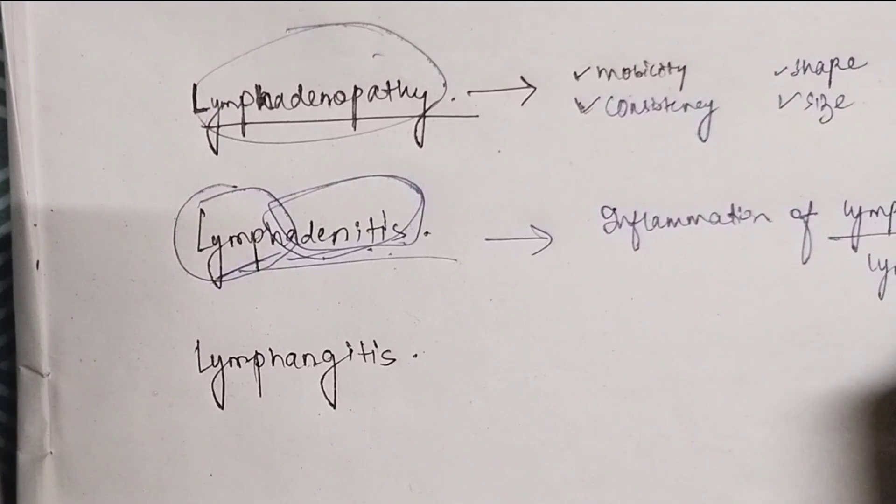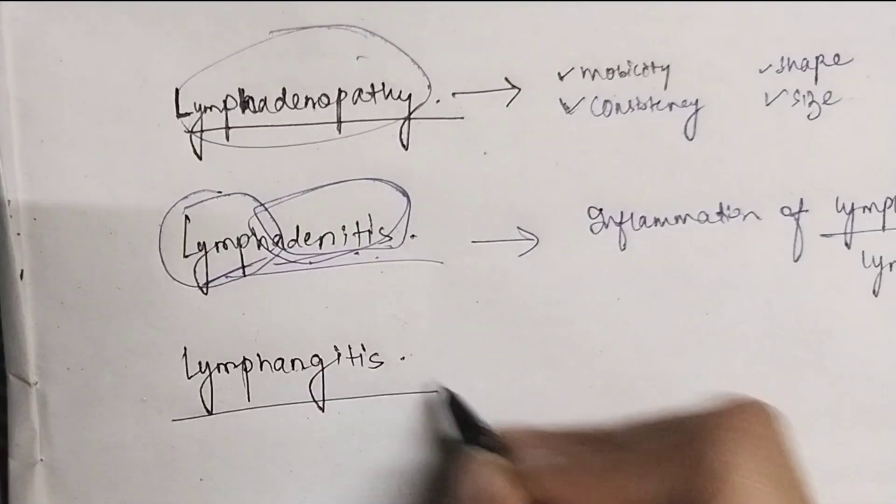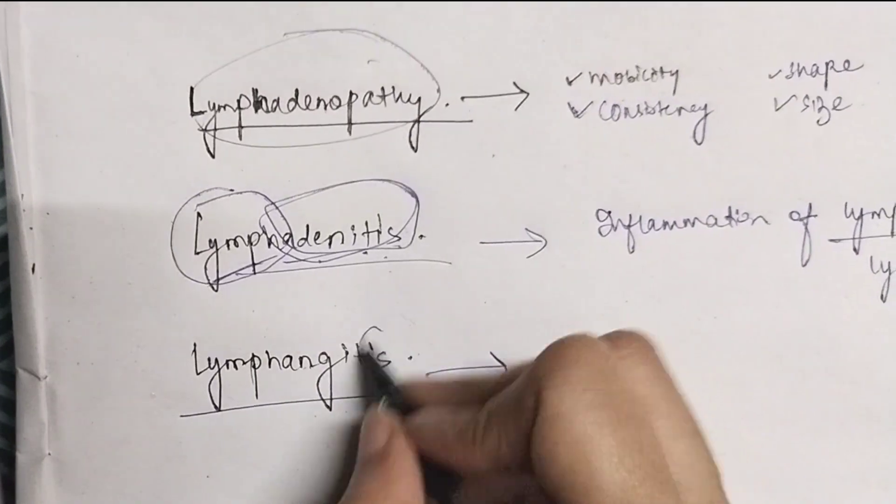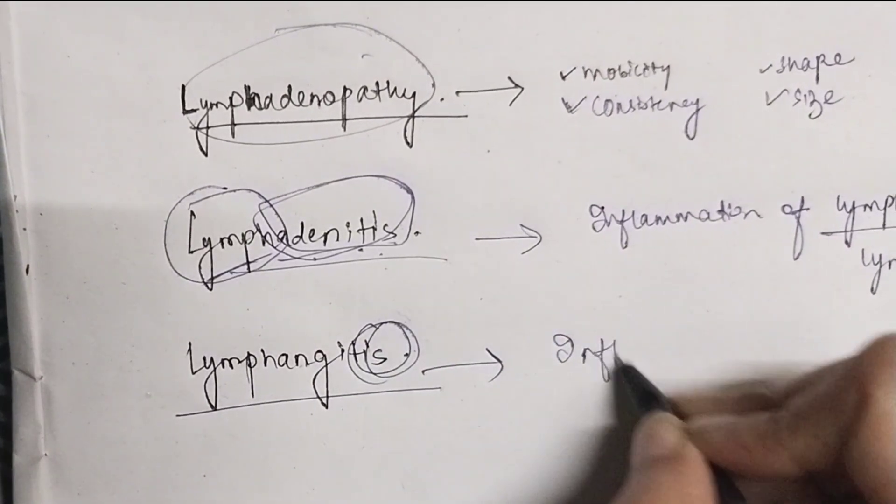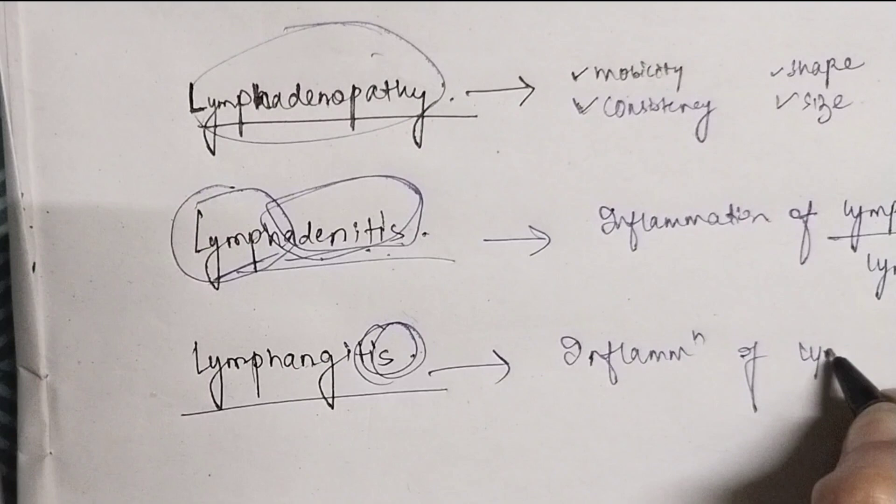And lymphangitis means itis, again itis means inflammation, so inflammation of lymphatic vessels.